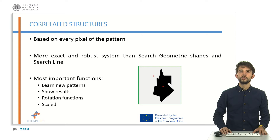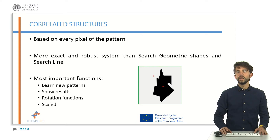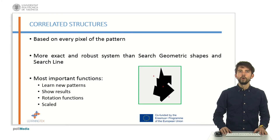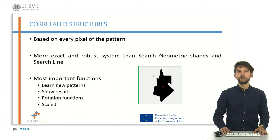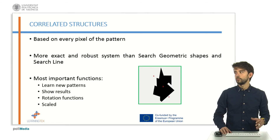Correlated structures algorithms are not based on contour lines — they are based on every pixel of the pattern shown. So the function works slower than geometric and linear structure-based algorithms, but the system is more robust and more exact.